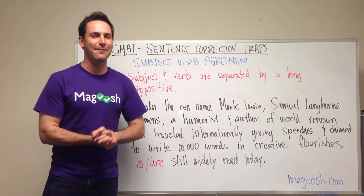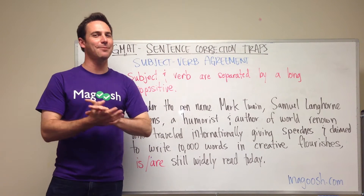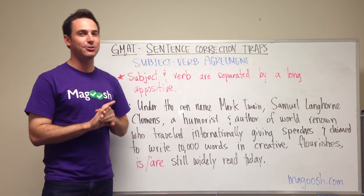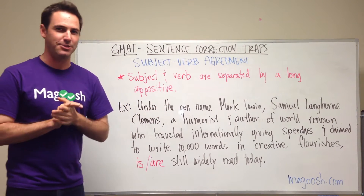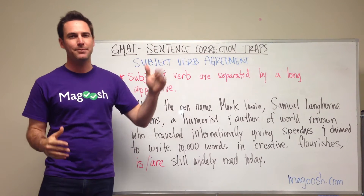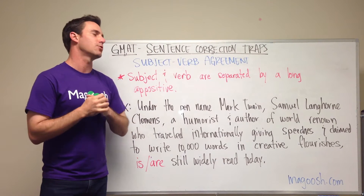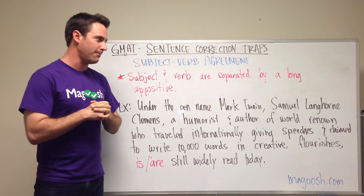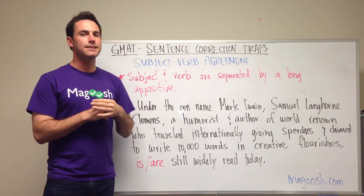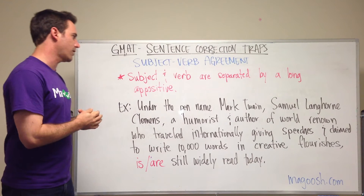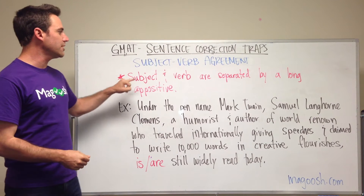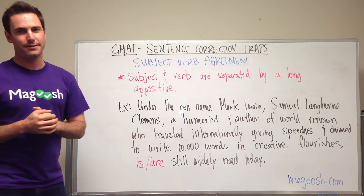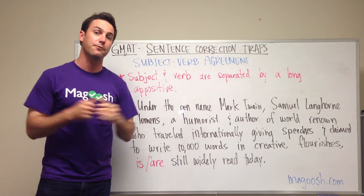Hello! My name is Kevin. I'm here from Magoosh, and we're talking more about GMAT sentence correction questions, and specifically traps that are built into these questions. Right now we're looking at subject-verb agreement traps, and this specific trap is when the subject and verb are separated by a very long appositive, or sometimes just a very long phrase.